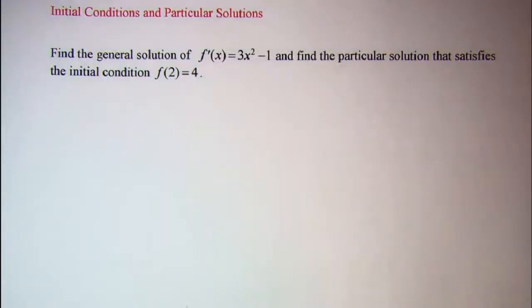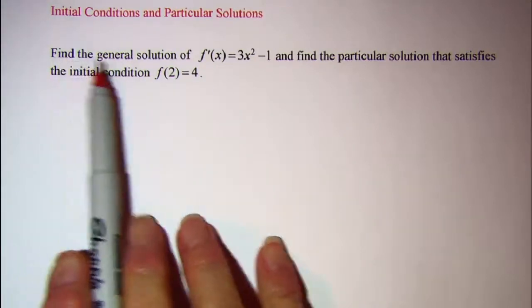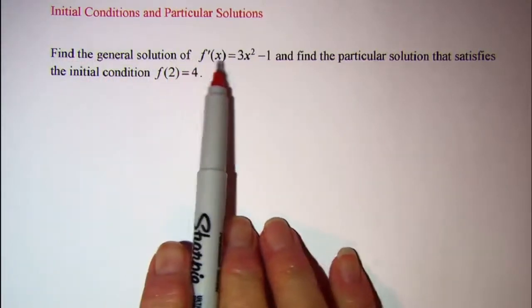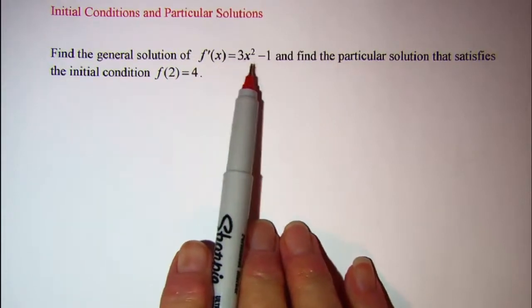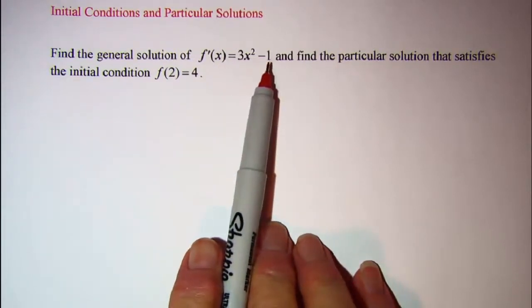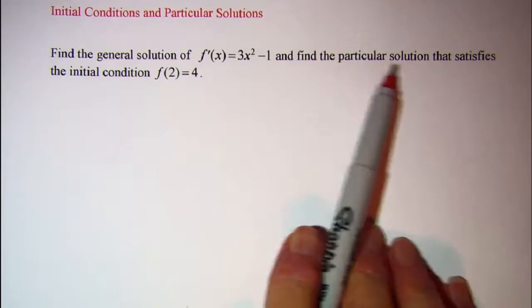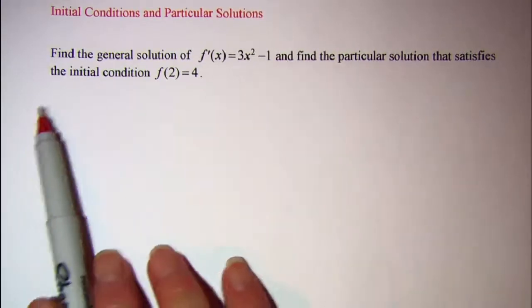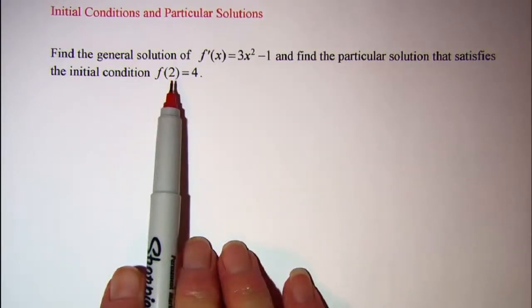In this video we will be looking at initial conditions and particular solutions. The problem is: find the general solution of f'(x) = 3x² - 1 and find the particular solution that satisfies the initial condition f(2) = 4.